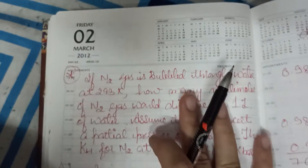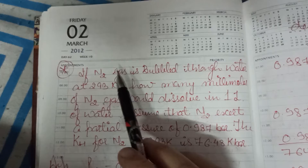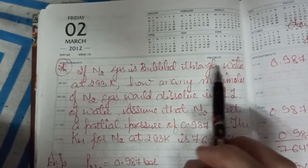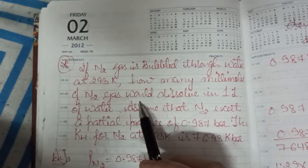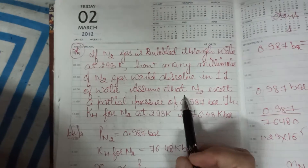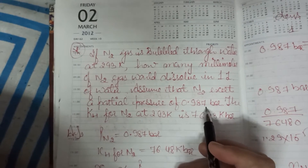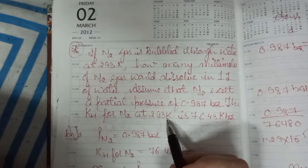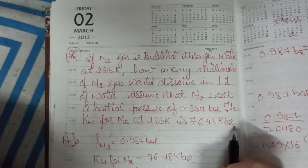Now we will take numericals. If nitrogen gas is bubbled through water at 293 K, how many millimoles of nitrogen gas would dissolve in 1 liter of water? Assume that nitrogen exerts a partial pressure of 0.987 bar. The kH for nitrogen at 293 K is 76.48 kbar.